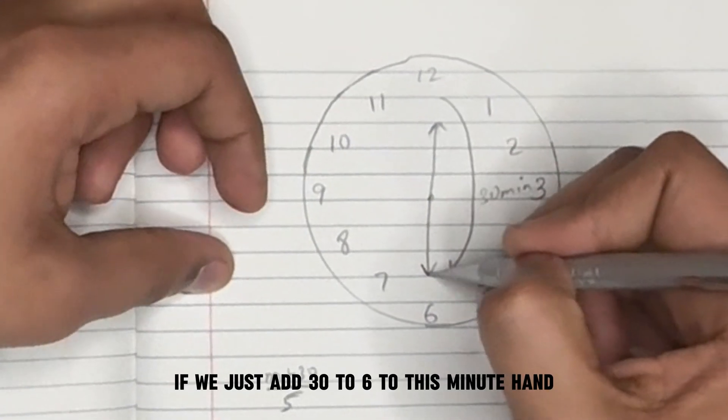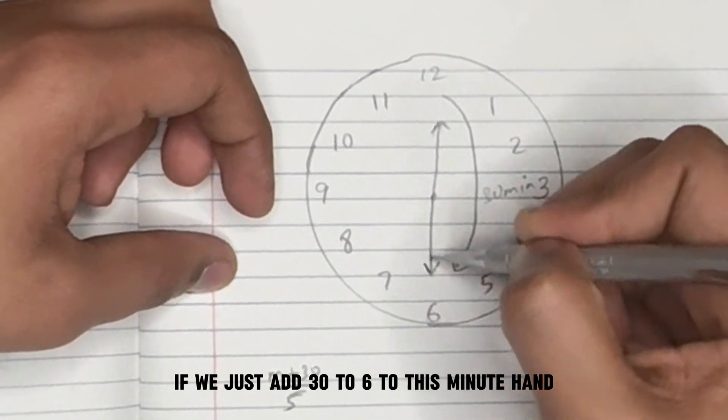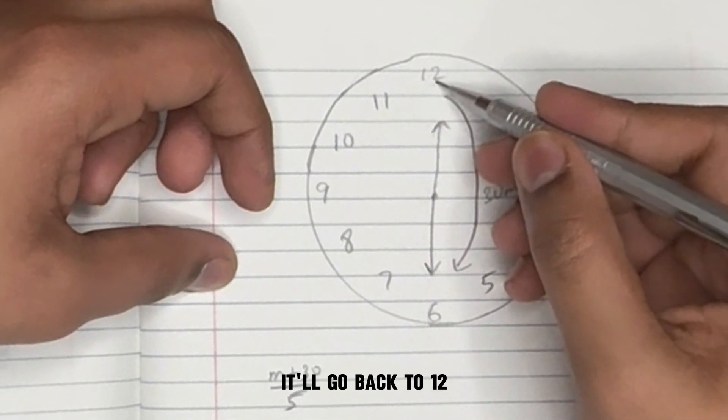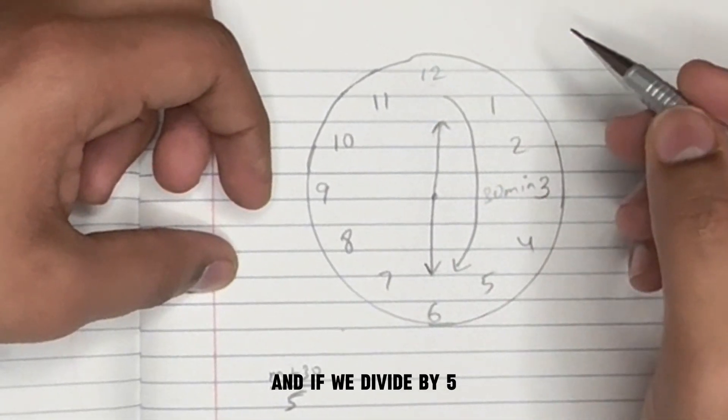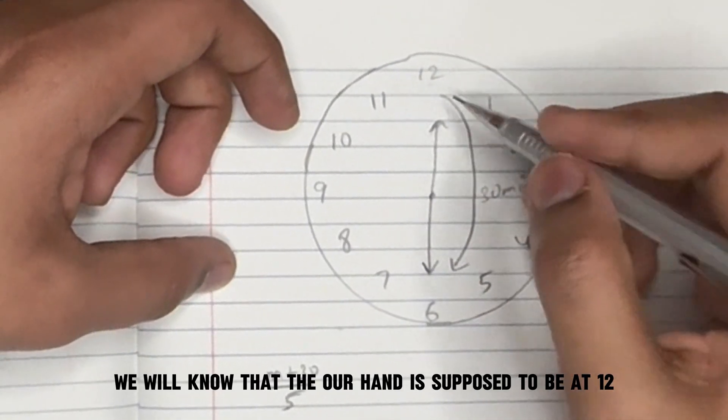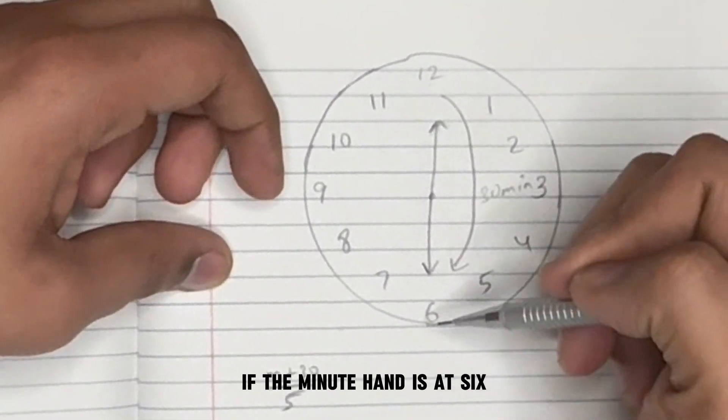In a simpler way, if we just add 30 to 6 to this minute hand, it'll go back to 12. And if we divide by 5, we will know that our hand is supposed to be at 12, if the minute hand is at 6.